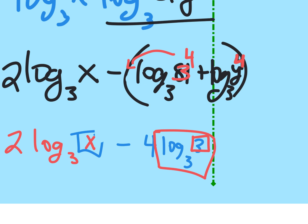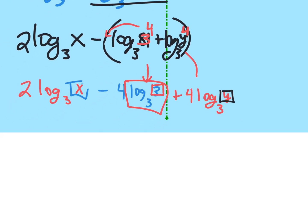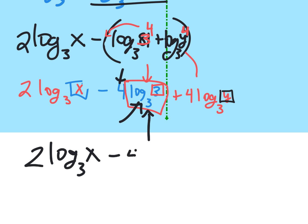I see this partial answer a lot on the test. All the kid had to notice was those bases are the same and it's one. So the final answer is: two log base three of x, minus four — because one times four is four — plus four log base three of y. To tell if you've expanded it all the way, look at the arguments: each should be just one thing.